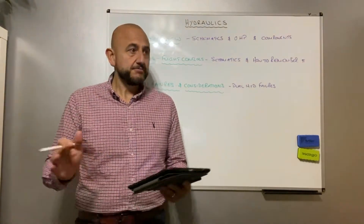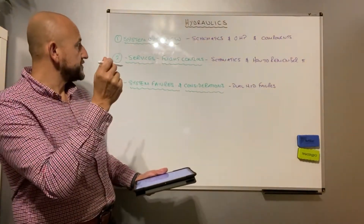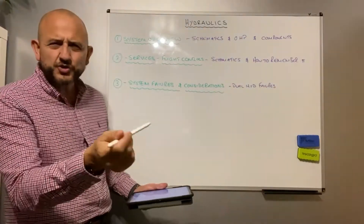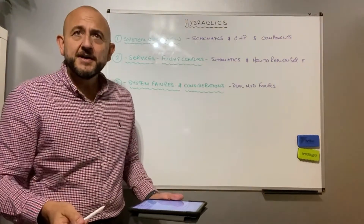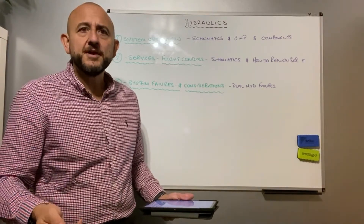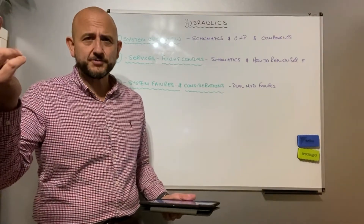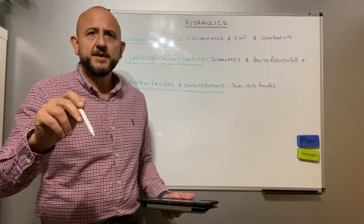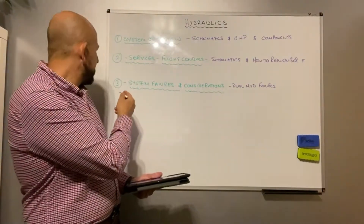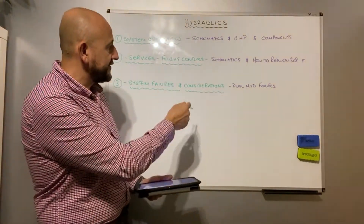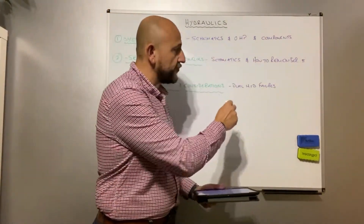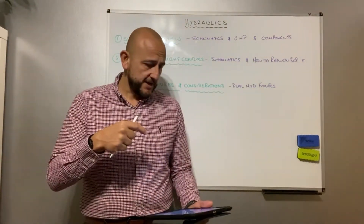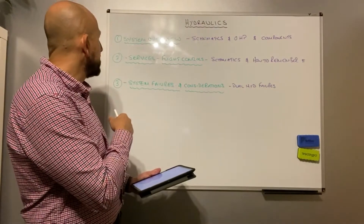So that's really what's on the board: system overview, services, flight control schematics and a little tip on how to remember it. I'm not sure if you can see this because I haven't invested in decent lighting — I've got really naff spotlights that were here when we bought the house. System failures, considerations, and dual hydraulic failures — good. I'm going to pause now, draw something on the board, and talk about the system overview.